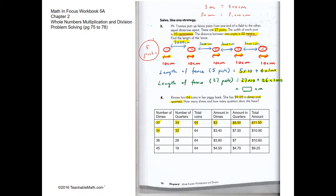We try 34 dimes and 30 quarters, which also make 64. 34 dimes give $3.40 and 30 quarters give $7.50, totalling $10.90. Continuing with trial and error, we try 45 dimes and 19 quarters — they make 64 coins. 45 dimes give $4.50 and 19 quarters give $4.75, which gives us $9.25. That's our answer.